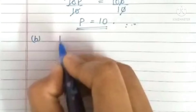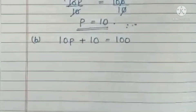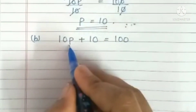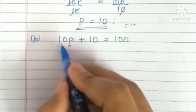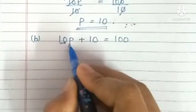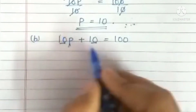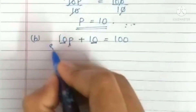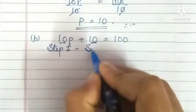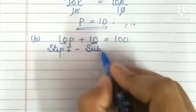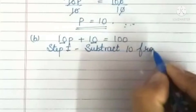The second part is 10p plus 10 is equal to 100. Here also the variable is p, so we need to separate this variable p. Here 10 is multiplied with p, and 10 is also added to 10p. So first we will remove this 10. Step number 1 will be subtract, because it is added — so we will subtract 10 from both sides.